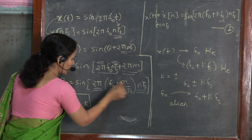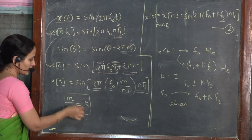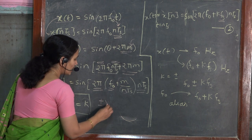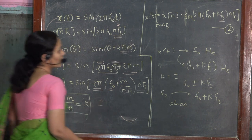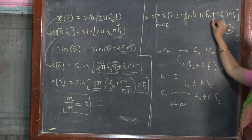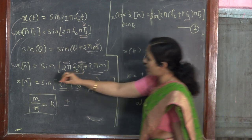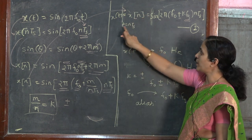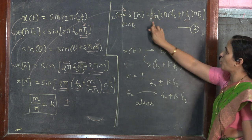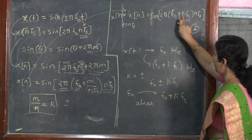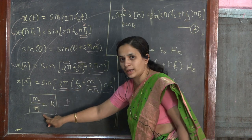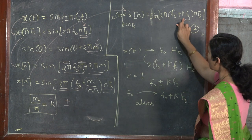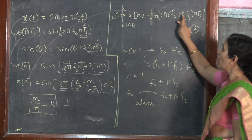Now m is an integer and n is an integer. Let me represent this ratio of two integers as k. The ratio of two integers is a rational number, so k is a rational number which can hold either a positive or negative value.